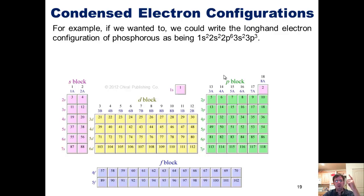For example, if we wanted to, we could write out the longhand electron configuration of phosphorus as being 1s2, 2s2, 2p6, 3s2, 3p3.